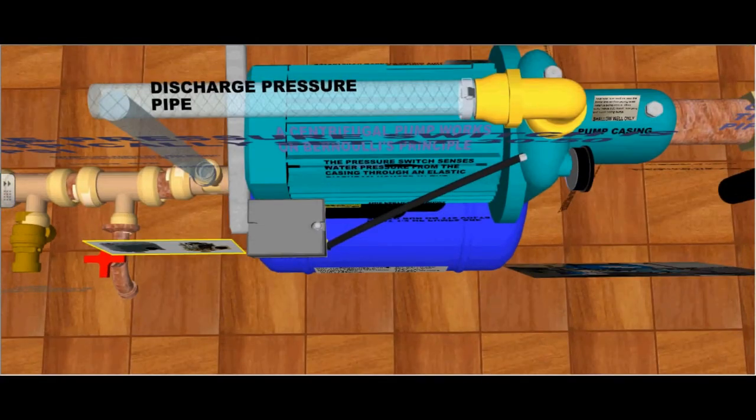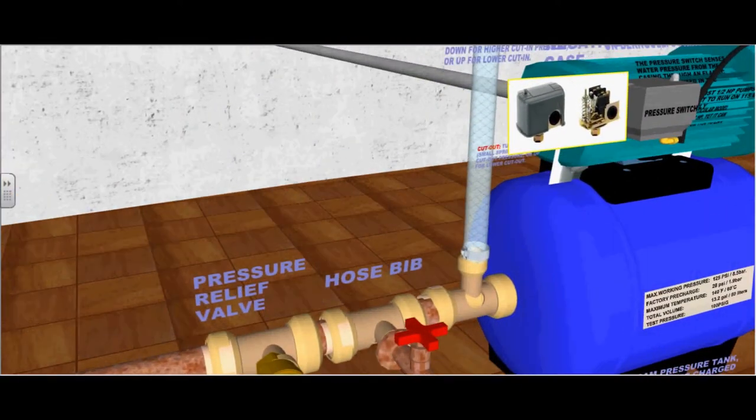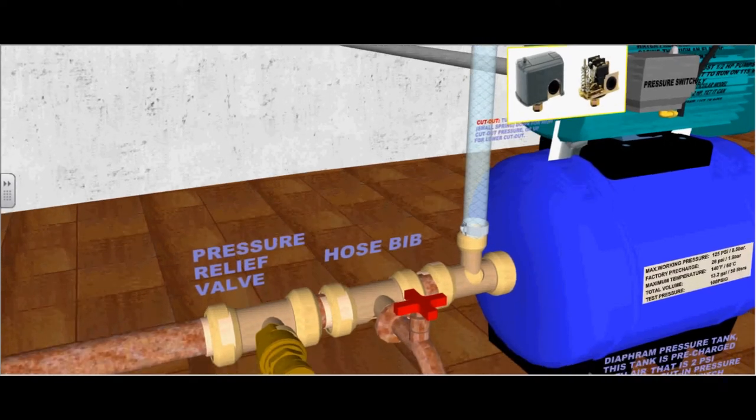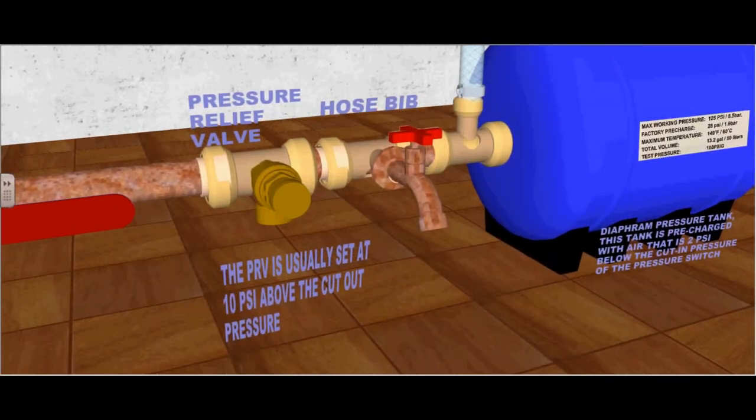This is the discharge pressure pipe coming from the volute casing. Here is a hose used to test the water and purge the system. This pressure relief valve is usually set at 10 psi above the cut-out pressure.